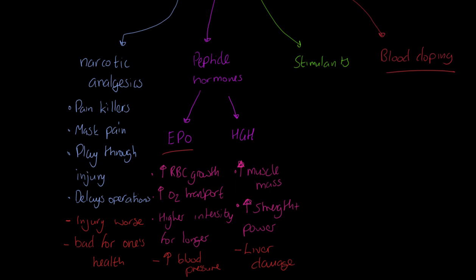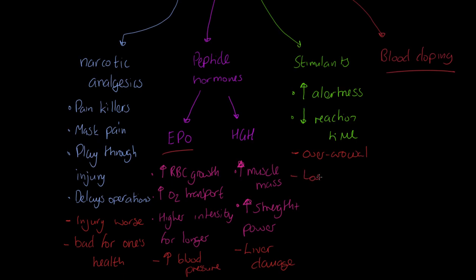Stimulants include caffeine — which is legal in sport these days — and amphetamine, which is illegal. Stimulants are essentially the opposite of beta blockers: they increase alertness, and they decrease reaction time, meaning you react faster. However, there are negatives: they might lead to over-arousal — getting too hyped — which could cause a loss of concentration. Arousal and decision making are closely linked, so over-arousal might lead to errors by the performer.